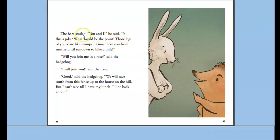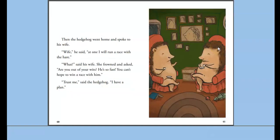The hare smiled. 'You and I?' he said. 'Is this a joke? What would be the point? Those legs of yours are like stumps. It must take you from sunrise until sundown to hike a mile.' 'Will you join me in a race?' said the hedgehog. 'I will join you,' said the hare. 'Good,' said the hedgehog. 'We will race south from this fence up to the house on the hill. But I can't race till I have my lunch — I'll be back at one.' Remember, this is a trickster's tale, so someone is going to be tricking the other animal. When the hedgehog went home and spoke to his wife, he said, 'Wife, at one, I will run a race with the hare.' 'What?' said his wife. She frowned and asked, 'Are you out of your wits? He's so fast. You can't hope to win a race with him.' 'Trust me,' said the hedgehog. 'I have a plan.'